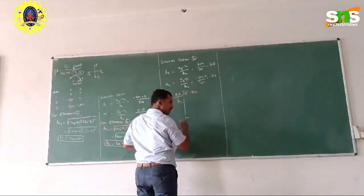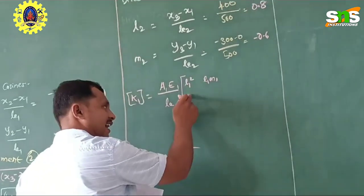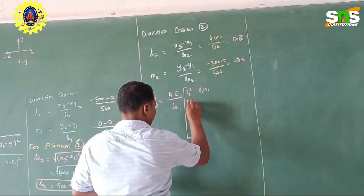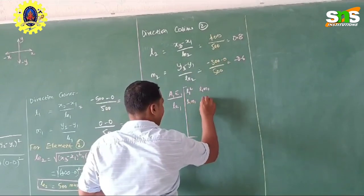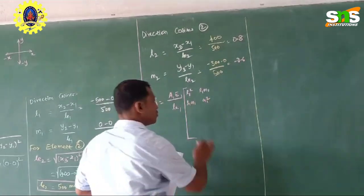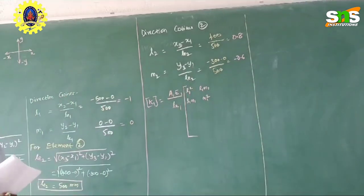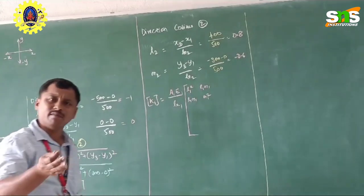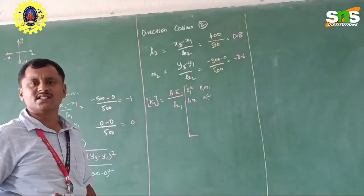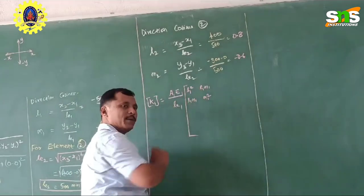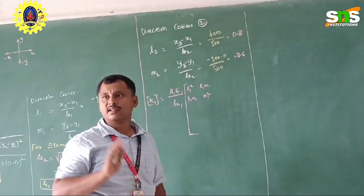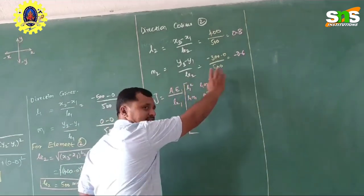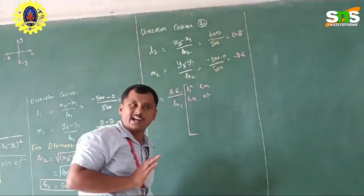The second term is l1, m1. Here it is m1 squared. So these 4 terms you have to remember in this formula. The remaining things are the same but equal and opposite in sign. All the values here are positive, so what you have to do is write the same values with a negative sign in the opposite quadrants.